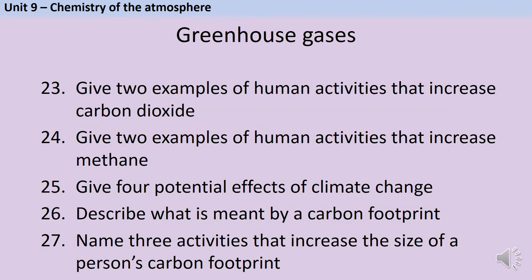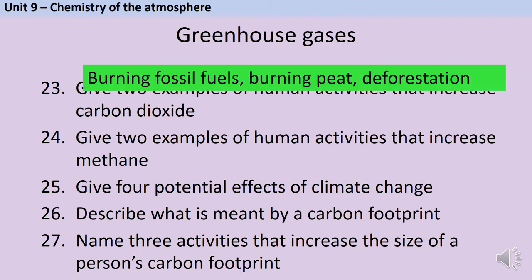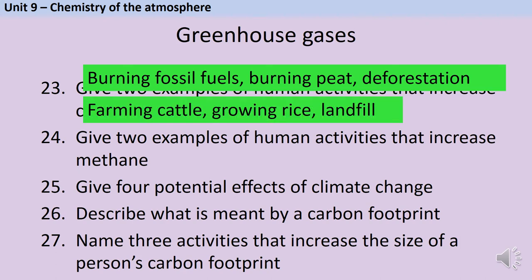Carbon dioxide levels are being increased by us burning fossil fuels, burning peat from peat bogs, and also by deforestation. Even though deforestation isn't going to release a huge amount of carbon dioxide directly, it means there are fewer trees taking in carbon dioxide, so overall the levels are going to rise. Amounts of methane in the atmosphere are increased by farming cattle, growing rice, and also by landfill.